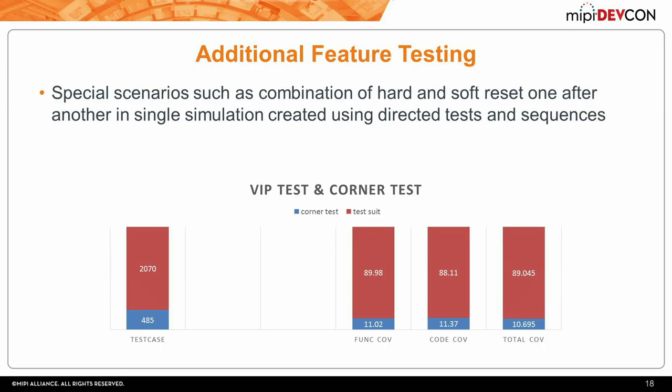This is the data generated by Analog Devices based on the verification they did using our SoundWire test suite. They ran the test suite test cases as-is. The number of tests is about 2,070—not the actual count but derived from randomization and different command-line options used to force specific test case configurations. Taking those into account, 2,070 test cases were able to generate about 90% coverage. They then wrote 485 directed test cases to hit the remaining coverage, bringing both code and functional coverage to 100%.